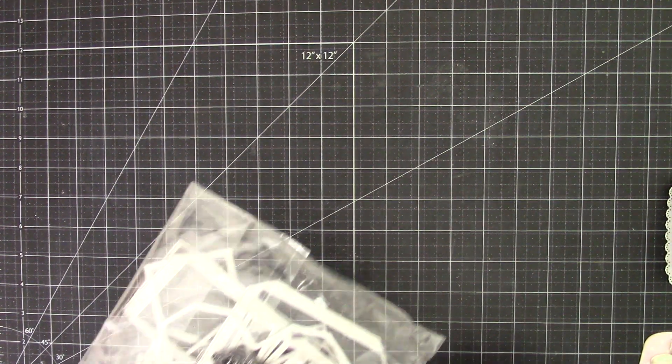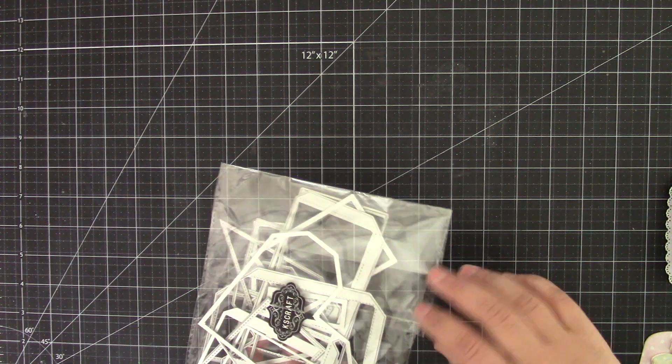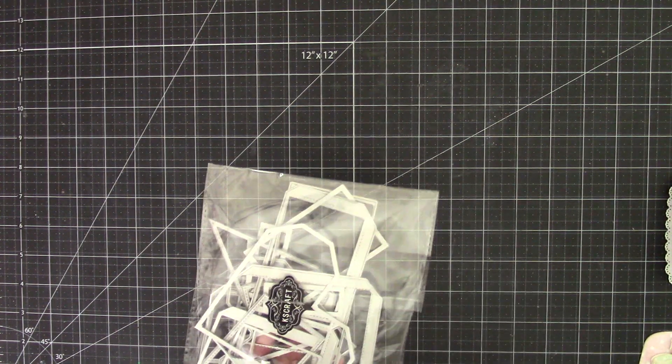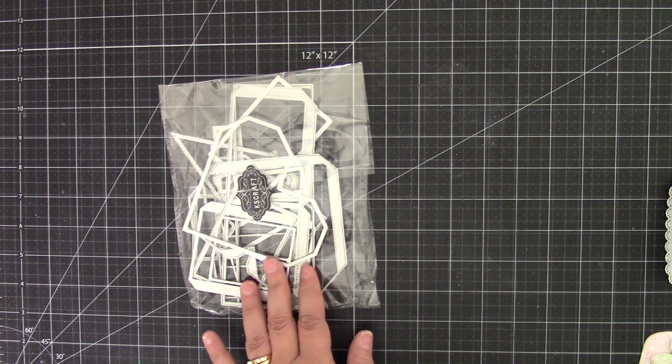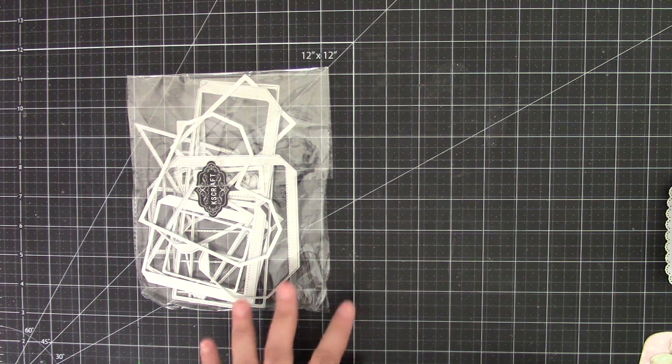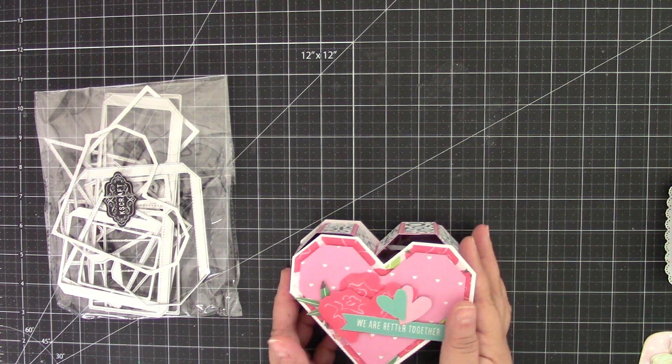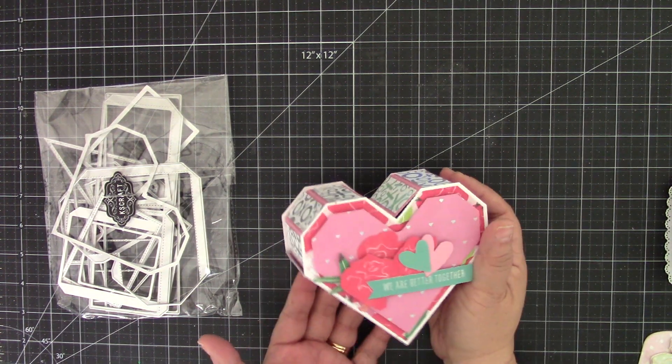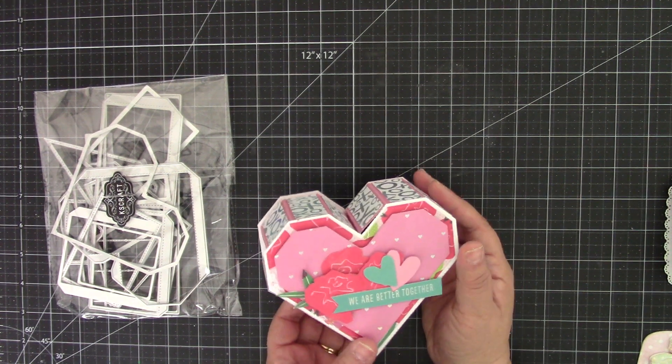So the first one is this 3D heart box. It's a really nice box. There's a lot of pieces. A lot of it has layering pieces which is really nice. And I really love this because it has drawers in it. And it's such a cute die set. So this is what I created here.